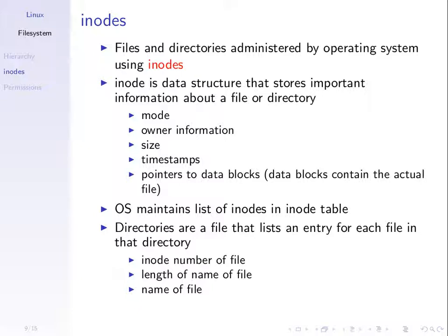Directories are also treated as files, but a special type of file that lists the entries for each file in that directory. Inside the directory file is information about the files within it, including the inode number and the name of each file. This is useful to be aware of because when it comes to permissions, we usually have the same access modes on both files and directories.